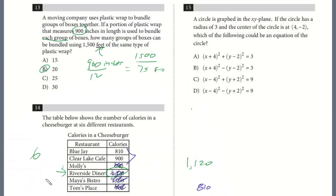And let's take a look at 15. A circle is graphed in the XY plane. If the circle has a radius of 3 and the center of the circle is at (4, -2), which of the following could be an equation of the circle?